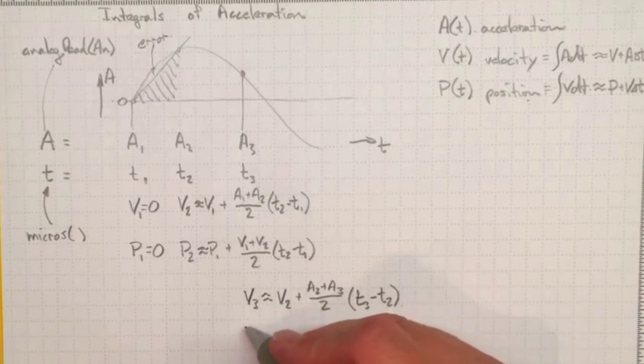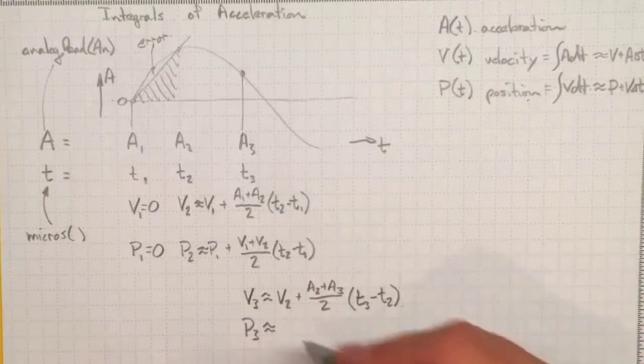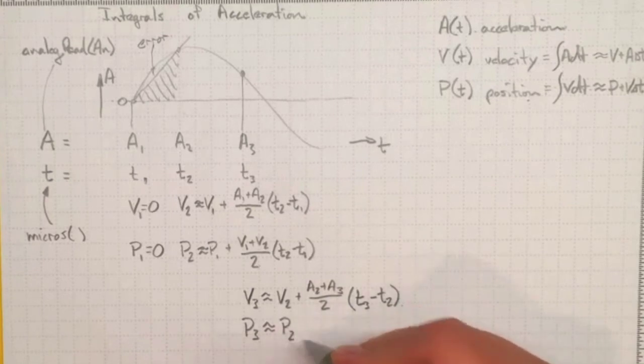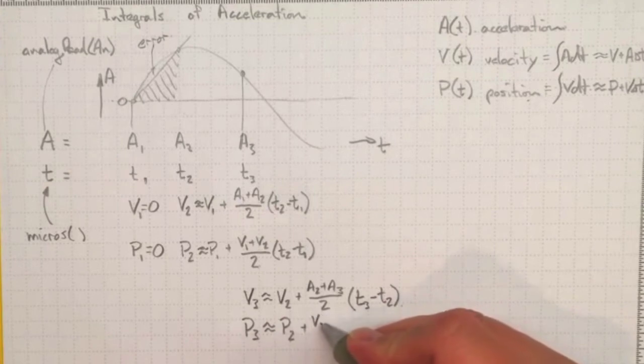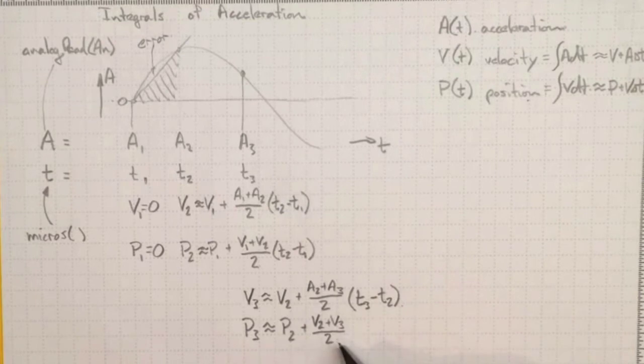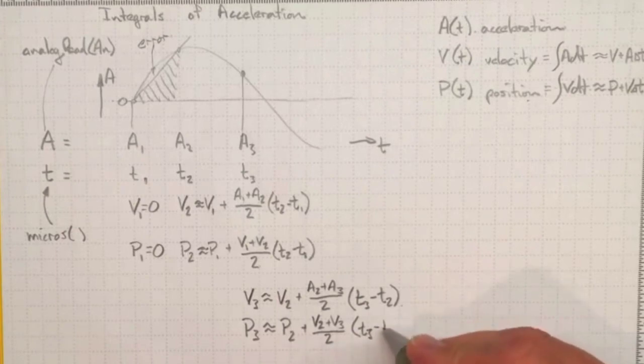And then we can also get position at 3 estimated as whatever the position was at 2 plus the velocity at 2 plus the velocity at 3 divided by 2, some average of the velocity, times delta t, t3 minus t2.